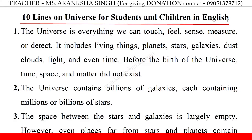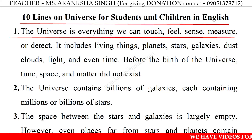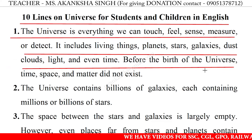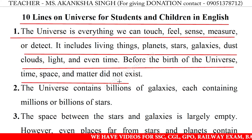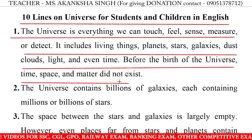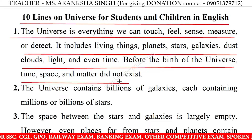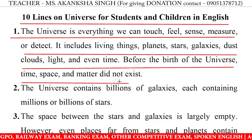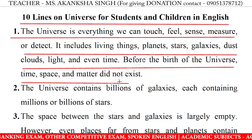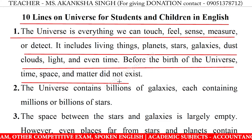Ten Lines on Universe for Students and Children in English. Number 1: The universe is everything we can touch, feel, sense, measure or detect. It includes living things, planets, stars, galaxies, dust, clouds, light and even time. Before the birth of the universe, time, space and matter did not exist.